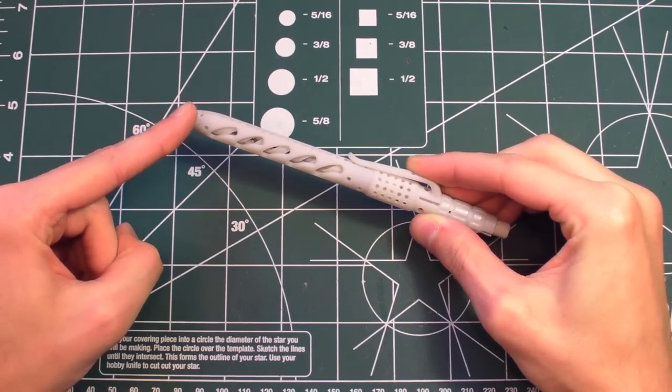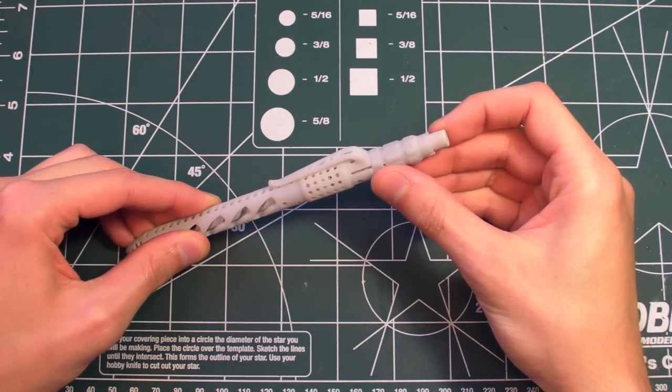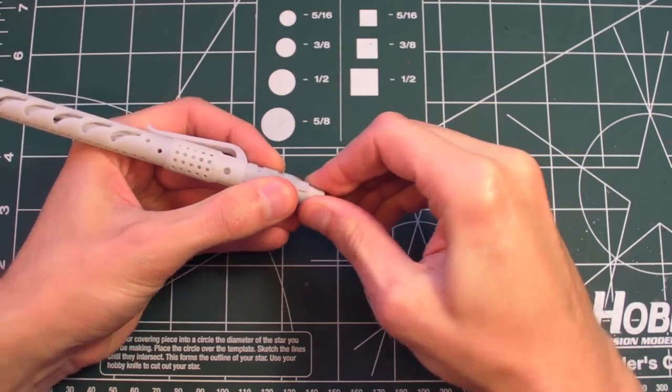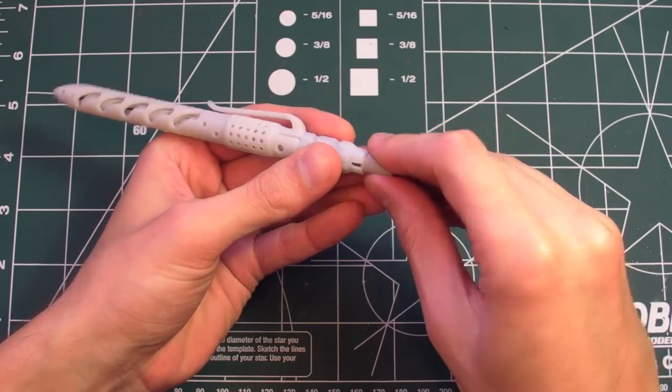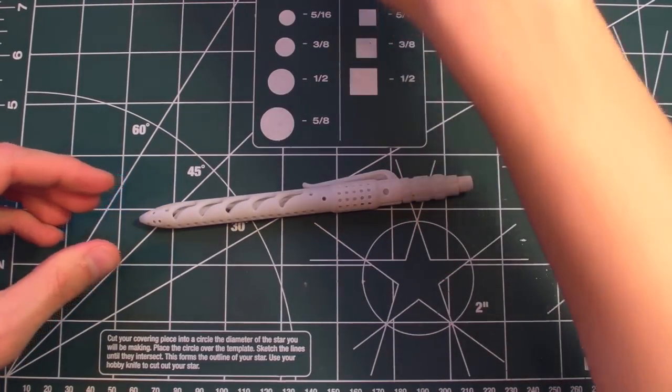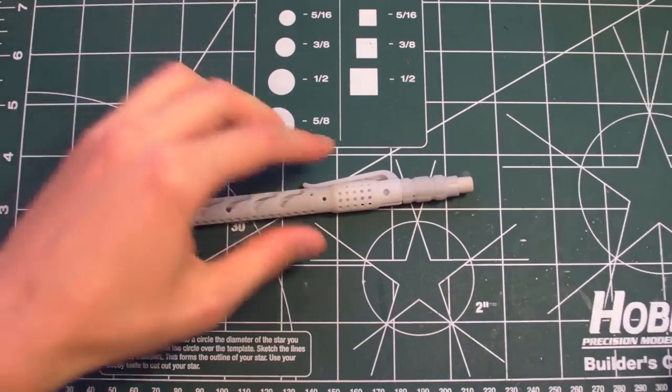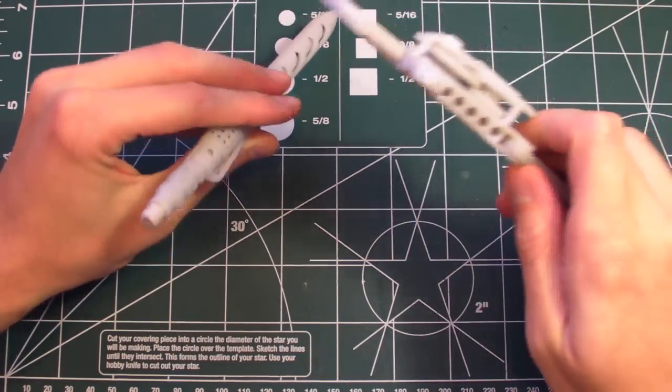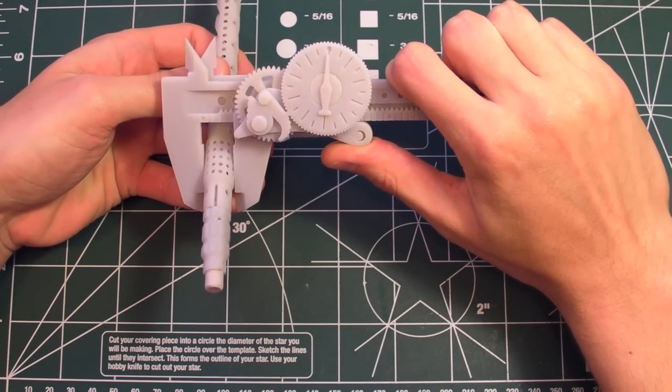It takes 0.9mm lead and 7mm diameter erasers. Additional lead can be stored behind the eraser. It's about 6 inches long and about half an inch in diameter.